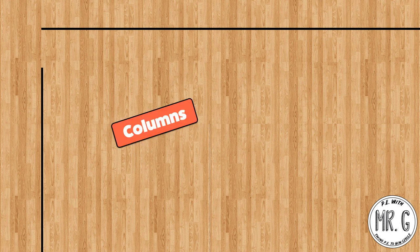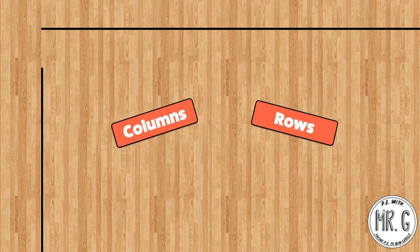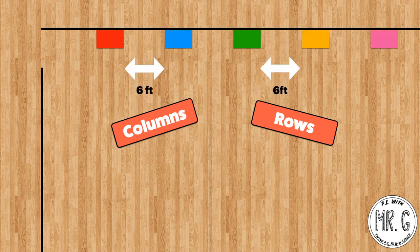There are two things you're going to need to create: columns and rows. To do this, you choose two different categories — it can be anything: colors, numbers, foods, animals, it really doesn't matter as long as they are different. What I always like to do is choose colors as my columns. I pick out five or six different colors and tape them up on the wall. Because of social distancing this year, I'm going to space them out so each column is six feet apart. One thing that is really important is making sure your columns are different — you don't want them all to be the same color. I did this the first week I tried it and it was a huge disaster, but once I changed to different colors it made it way easier for kids to remember their color column.